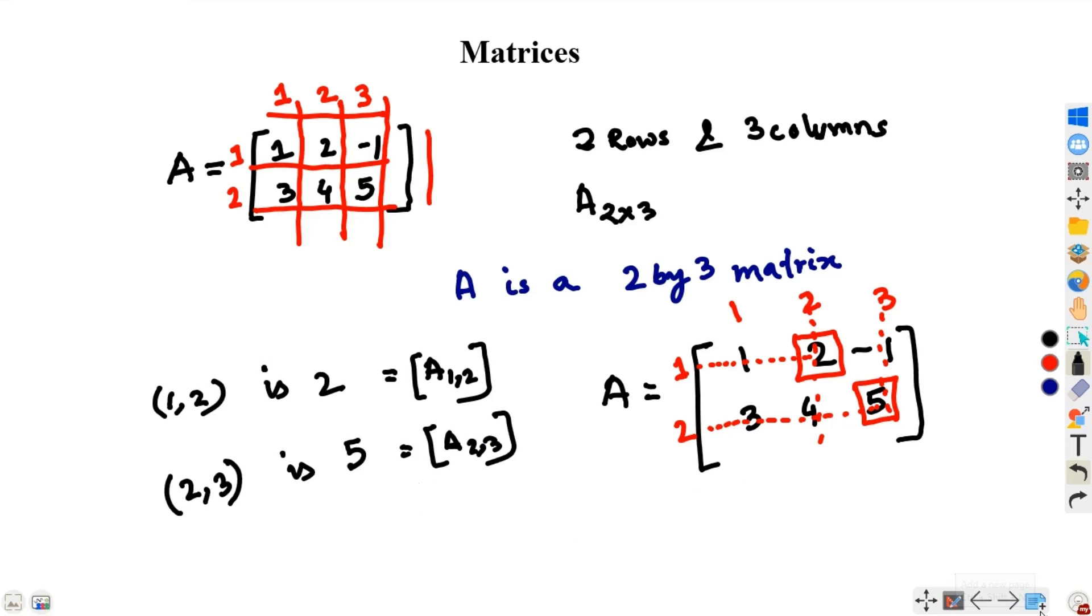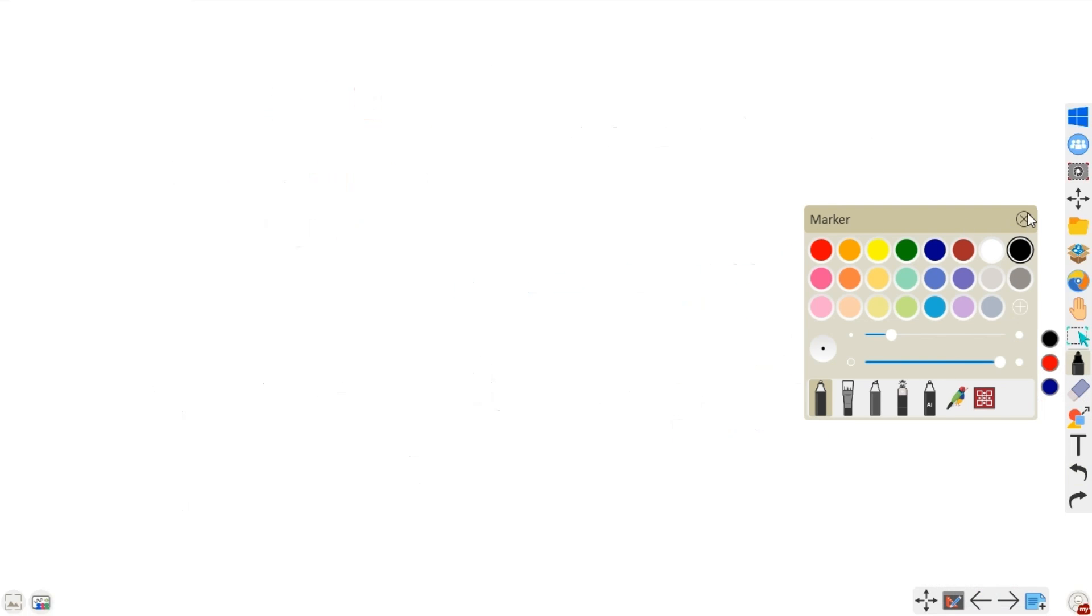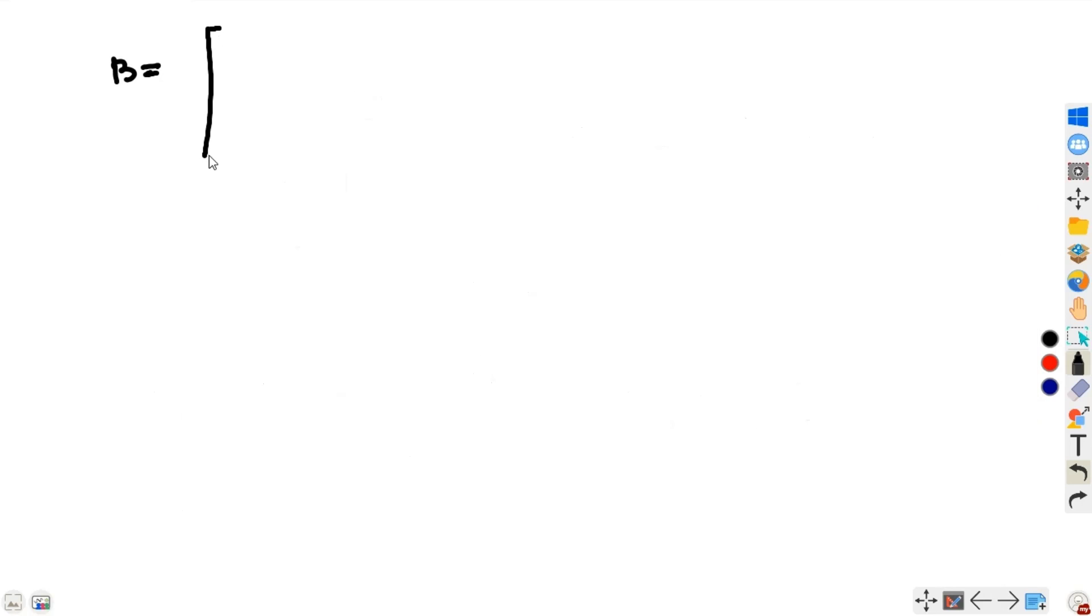Okay, let us take another example. Suppose B is a matrix. Let us say minus 1, 2, 3, minus 10, 4, 5, 1, 3, 2, 7, minus 6. Now, how many rows are here? We have 1, 2, 3. There are 3 rows. Therefore, we have 3 rows and how many columns are there? 1, 2, 3, 4. There are 4 columns. Therefore, B is a 3 by 4 matrix. Size of B is 3 by 4.